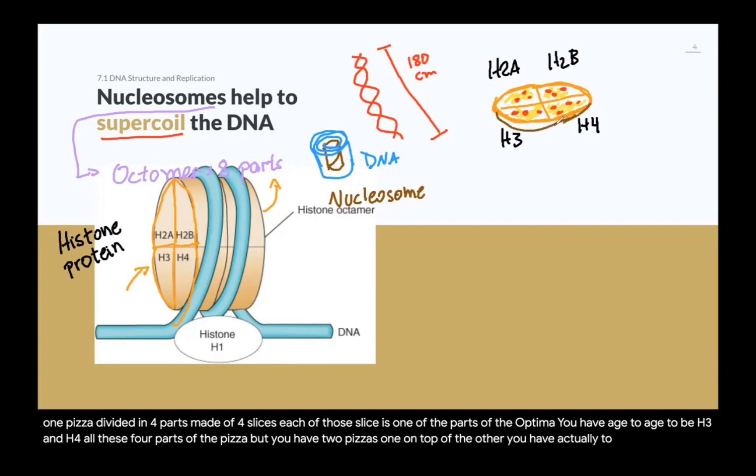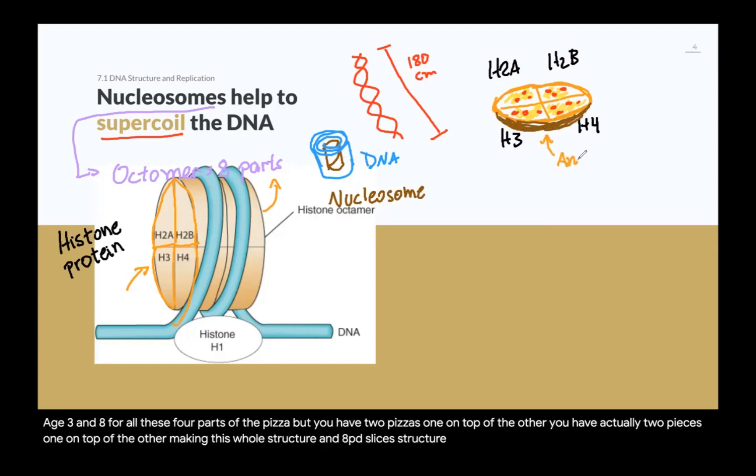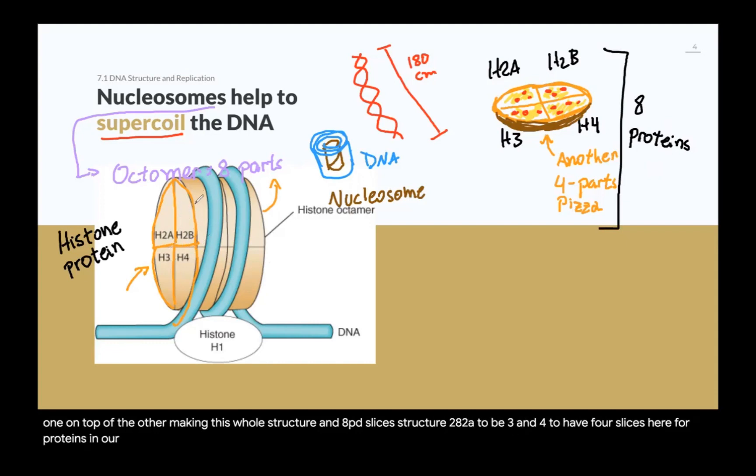So you have one pizza divided in four parts, made of four slices. Each of those slices is one of the parts of the octomer. So you have H2A, H2B, H3, and H4, all these four parts of the pizza. But you have two pizzas, one on top of the other, making this whole structure an eight slices structure. So you have H2A, 2B, 3, and 4. So you have four slices here, four proteins in our pizza. But you have two, one on top of the other. So in total, you have an octomer. You have eight slices, eight proteins, making this nucleosome here.